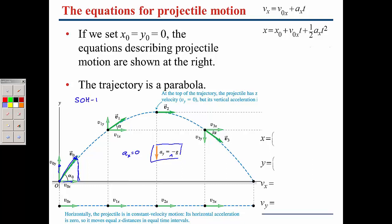Remembering your trig — SOH-CAH-TOA — the sine of an angle is equal to the opposite divided by the hypotenuse. So we can write v₀x equal to v times the cosine of angle alpha, and v₀y equal to v times the sine of the angle.